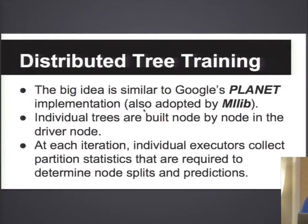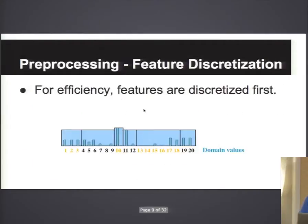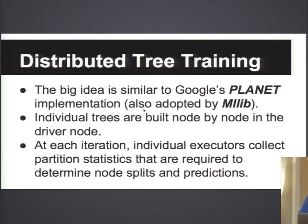The main idea is actually pretty similar to what was first published in the Google paper called Planet, which is a MapReduce-based decision tree. The basic idea is that you're building trees node by node by aggregating statistics from different partitions.